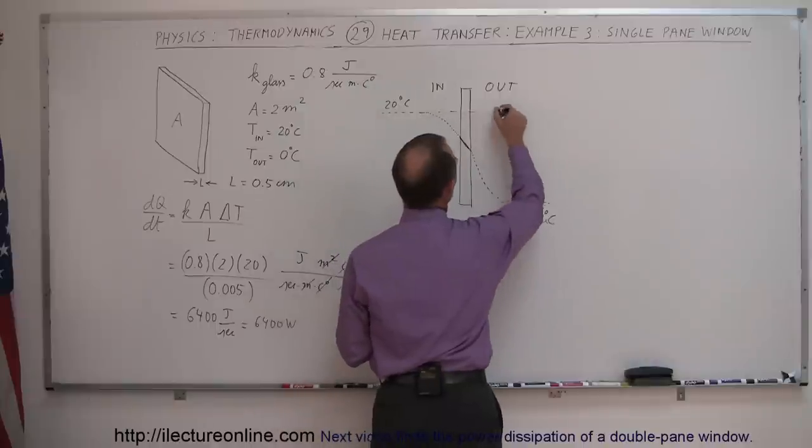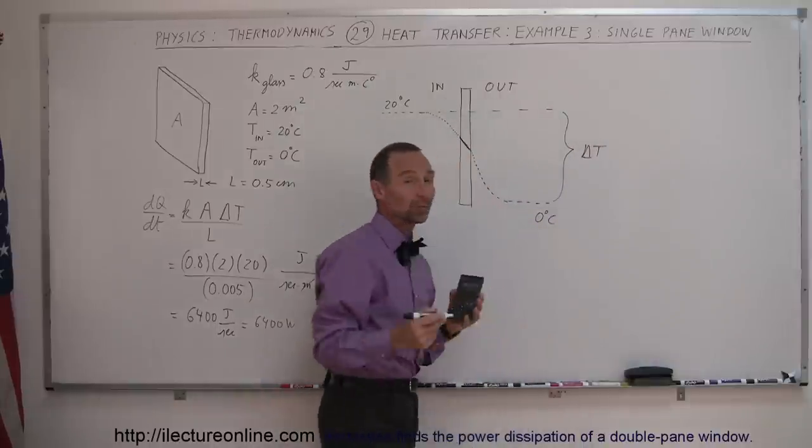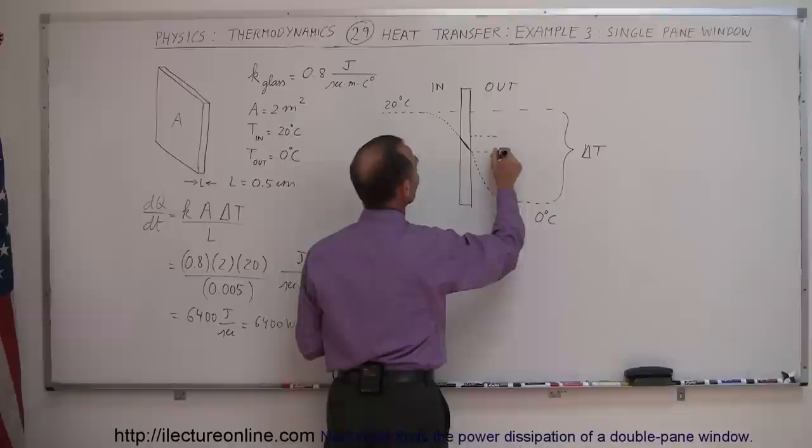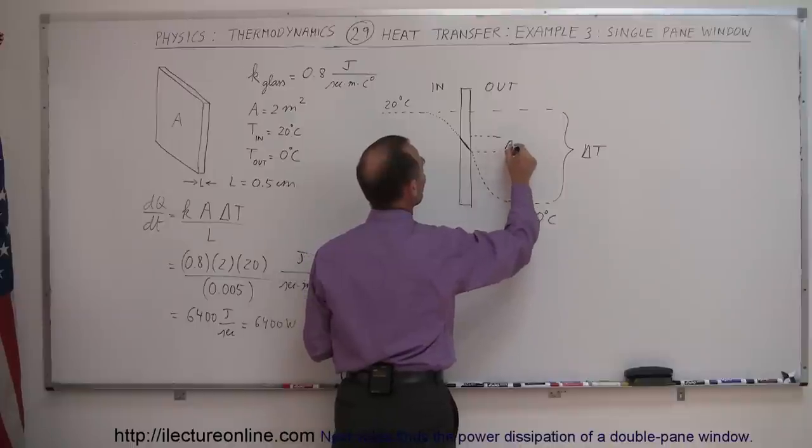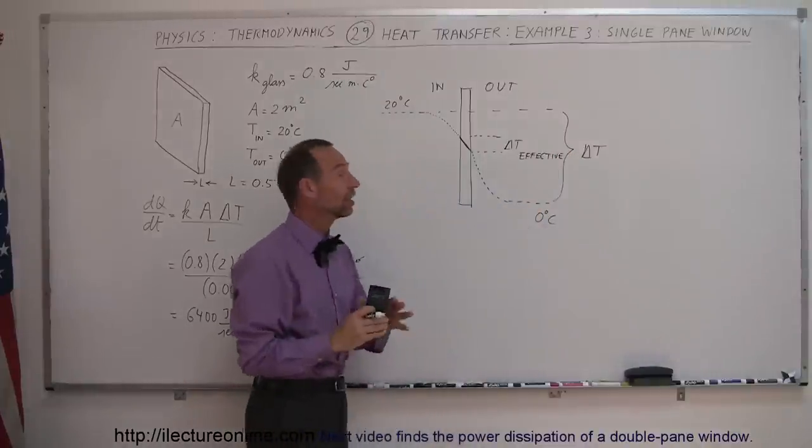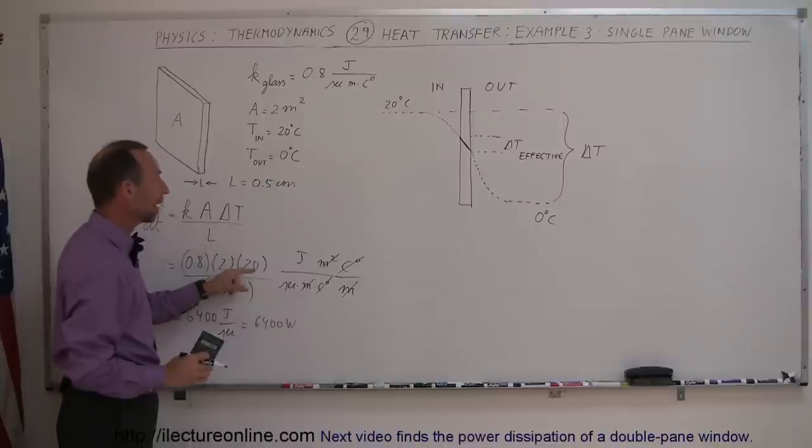Even though this would be the delta T relative to air temperature inside and outside, this is the effective temperature difference. This delta T effective should be used to calculate heat transfer across the glass. You can see this delta T is much smaller than 20 degrees Celsius, so the actual number would be much smaller.